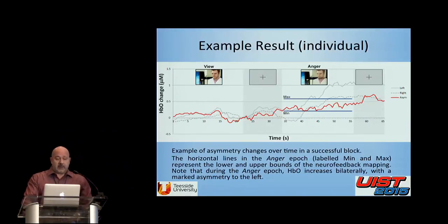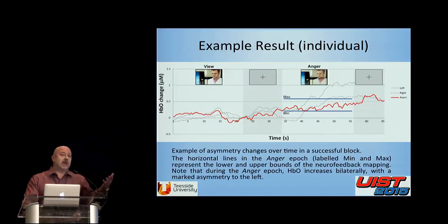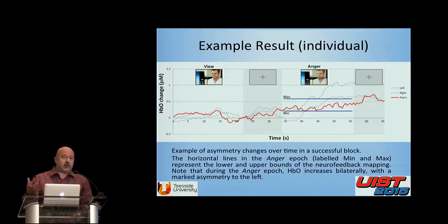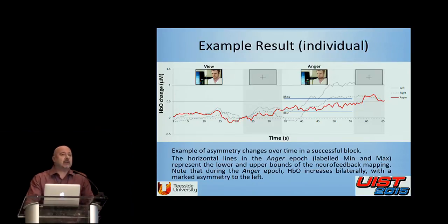Moving to results: a sample plot for one successful individual shows that the difference in activity is moderate during calibration — the cognitive counting task — during which the subject is not expressing any anger. When they enter the neurofeedback phase under instruction to express anger, you can clearly see the difference in activity. When measuring asymmetry between left and right, you can have left going up, right going down, or only one side changing. In most cases, what we observe is an increase in left prefrontal cortex activity.